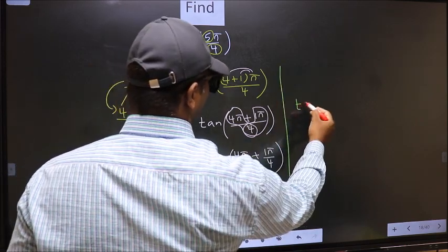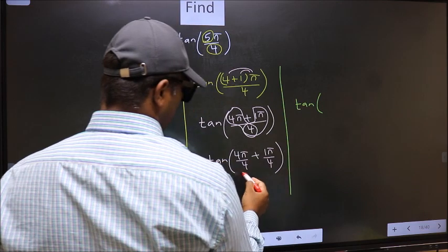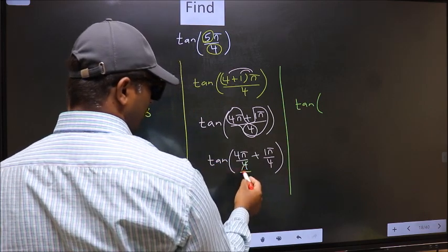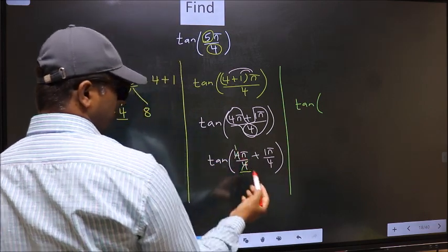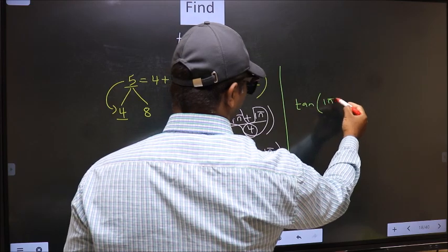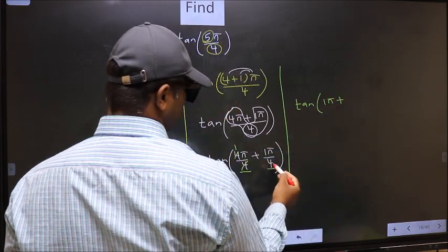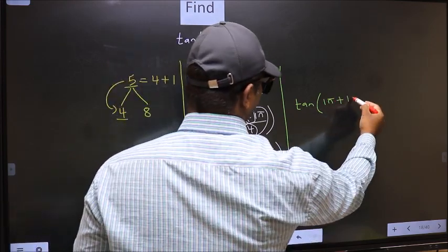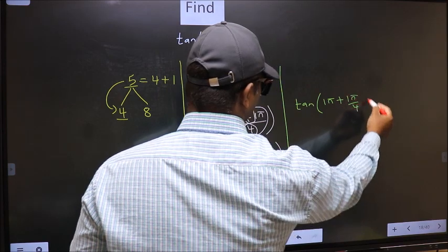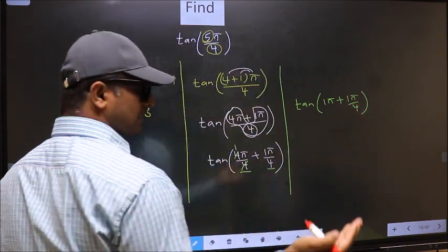Tan—over here, you should cancel 4 and 4. We get 1π, which is π, plus 1π/4 with no change.